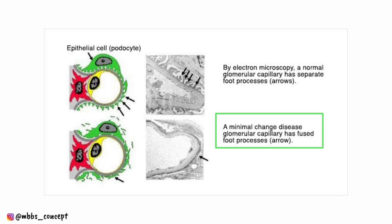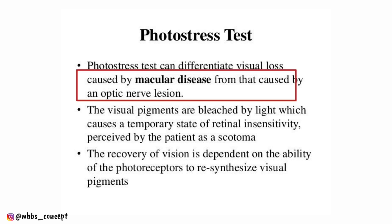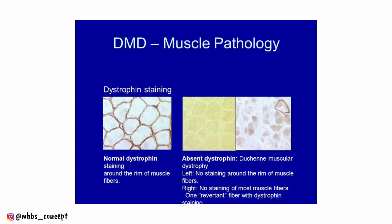Another question asked about the hormone acting through the tyrosine kinase receptor — it is insulin. Another question asked about the effacement of podocytes — it is seen in minimal change disease. One question on the photo stress test: it is used for macular diseases and optic nerve lesions.